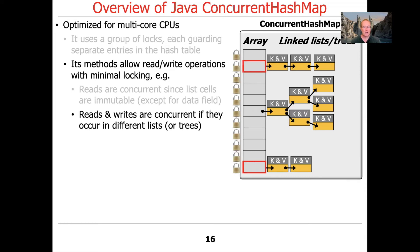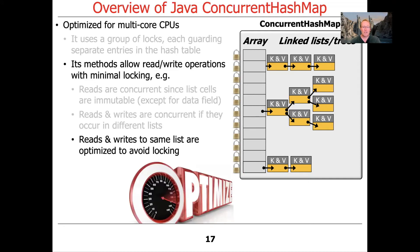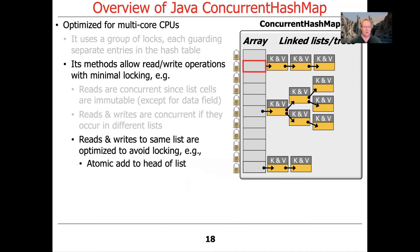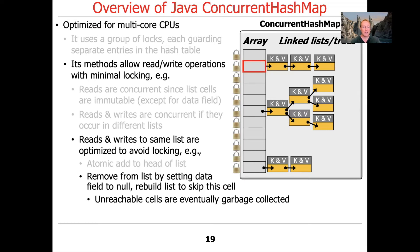If reads and writes occur in different portions of the underlying hash table array, they won't compete because there's no common lock shared — each element is synchronized by its own compare-and-swap operation. If reads and writes happen on the same list, they're optimized to avoid locking as much as possible: you can atomically add an element to the head of a list, or remove something by setting its data field to null and later rearranging the list.